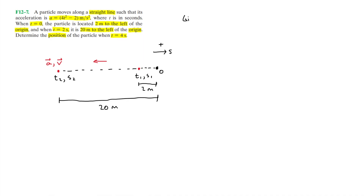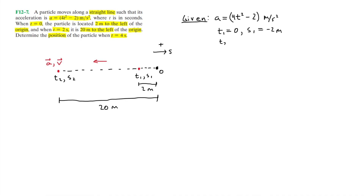Now I'll write out our given values. The acceleration is the expression 4t² - 2 meters per second squared, which is in terms of time t. At the initial time t = 0, the position s₁ is negative 2 meters since the positive direction is to the right. And t₂ = 2 seconds, where the particle is 20 meters to the left of the origin, so s₂ = -20 meters.